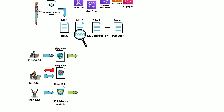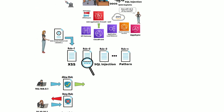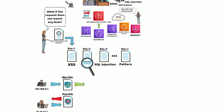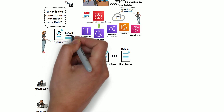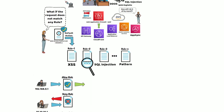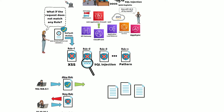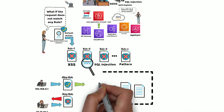Jennifer also started wondering how the request would be treated if it did not match any rule she created. However, upon further investigation, she found that she can use a default action on the WebACL to control the behavior when the request does not match any rule. Furthermore, she learned that she could use WAF rules individually or group them in reusable rule groups.